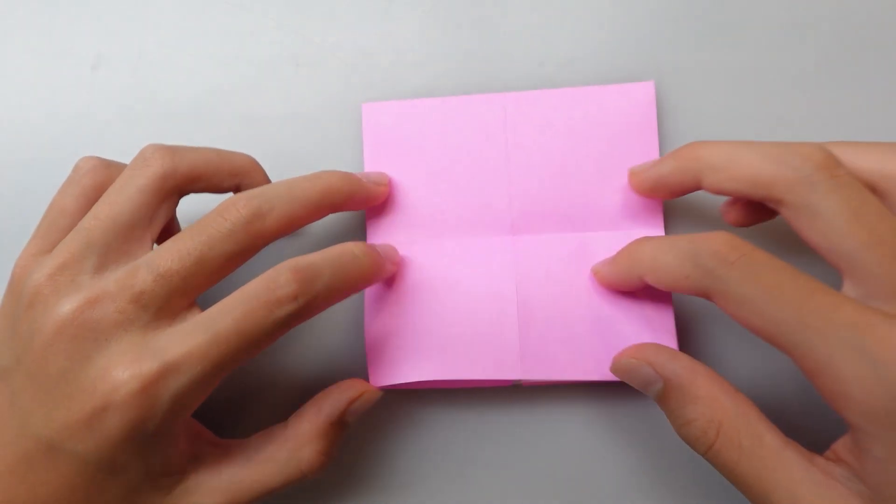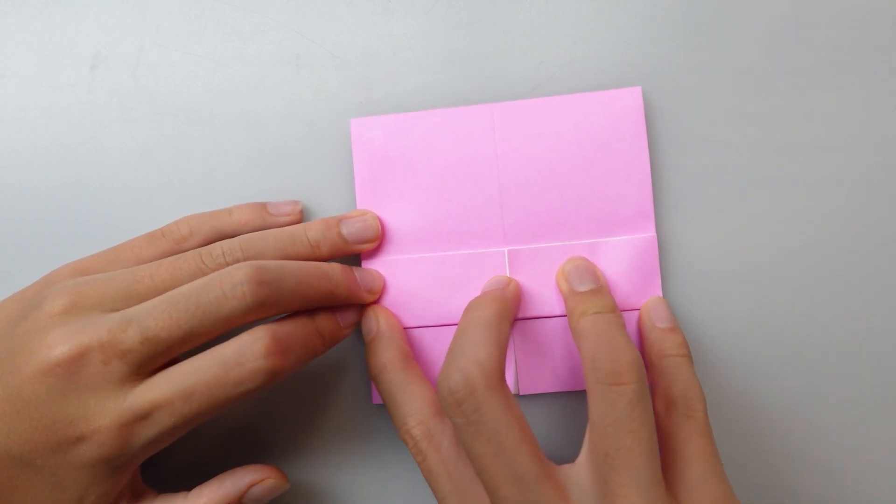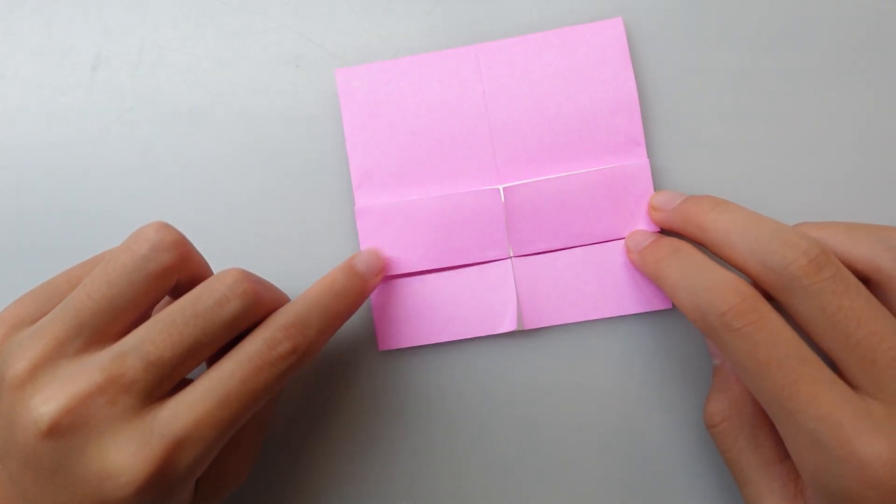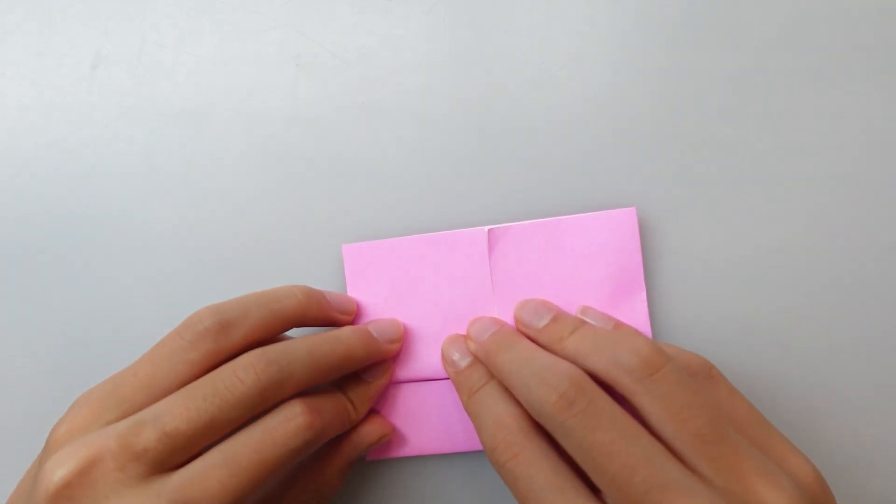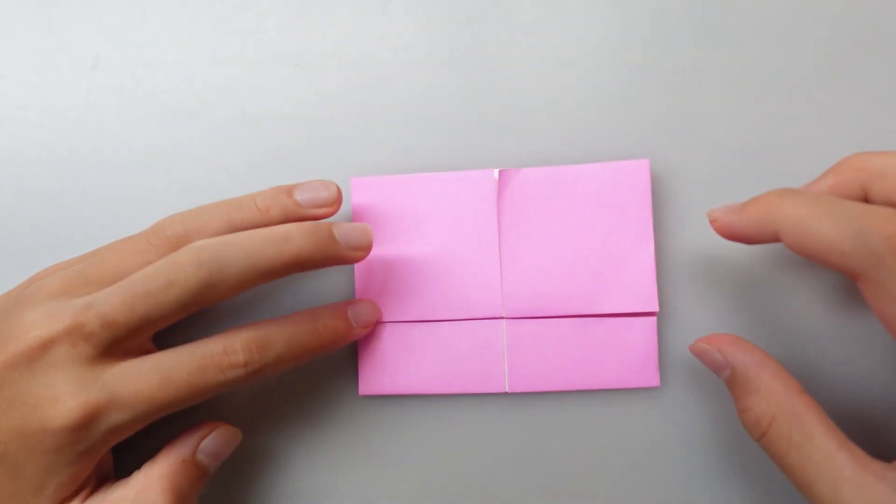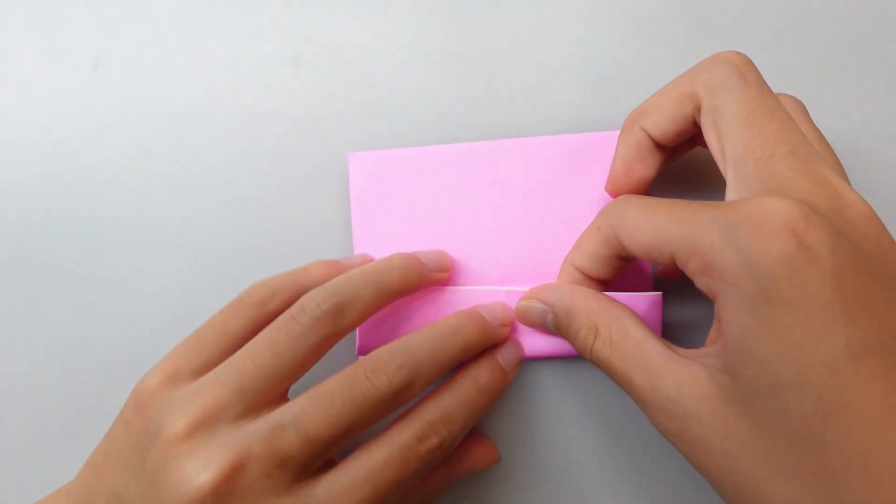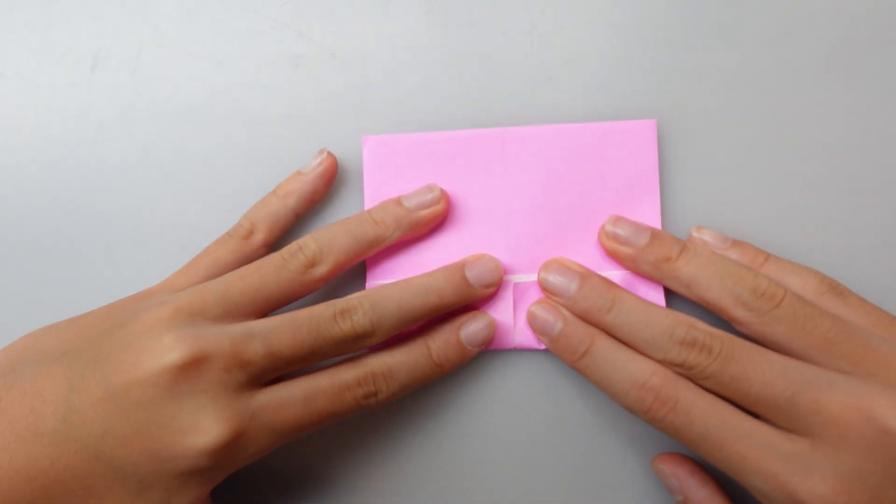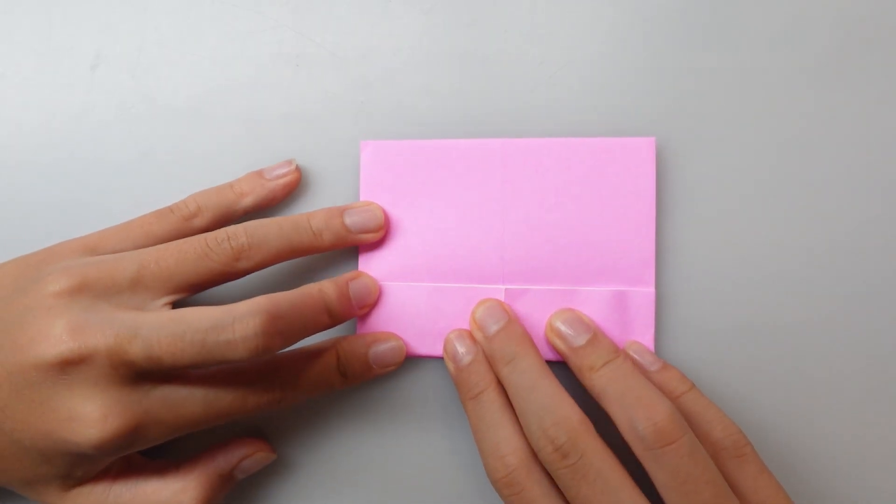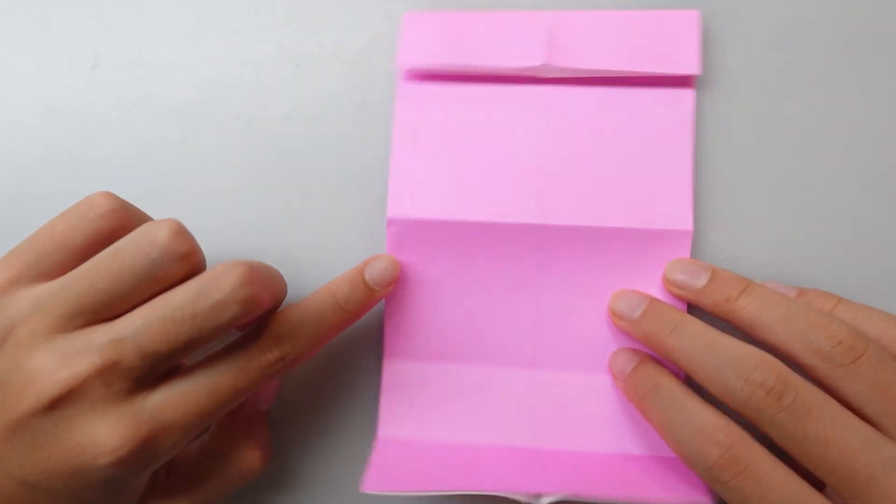Just unfold and fold the bottom edge to the crease. This will later become the eye. Now let's turn over and fold to the top edge. Let's unfold and fold to that crease, just like we did on the other side. Still trying to have no white showing. Having a little white is okay. Let's unfold that.